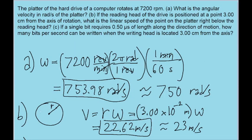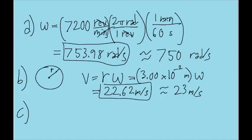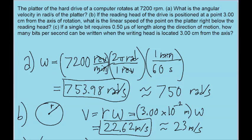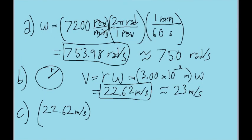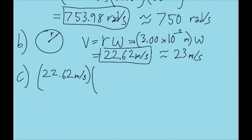The final part of the problem asks us to find the number of bits per second being read at this point. We've already found the speed, so all we've got to do is take that speed, 22.62 meters per second, and take into account the fact that the problem tells us that one bit is read in a length of 0.5 microseconds. This will be kind of like a unit conversion where we convert from meters to bits. So 0.5×10^-6 meters is equal to 1 bit.